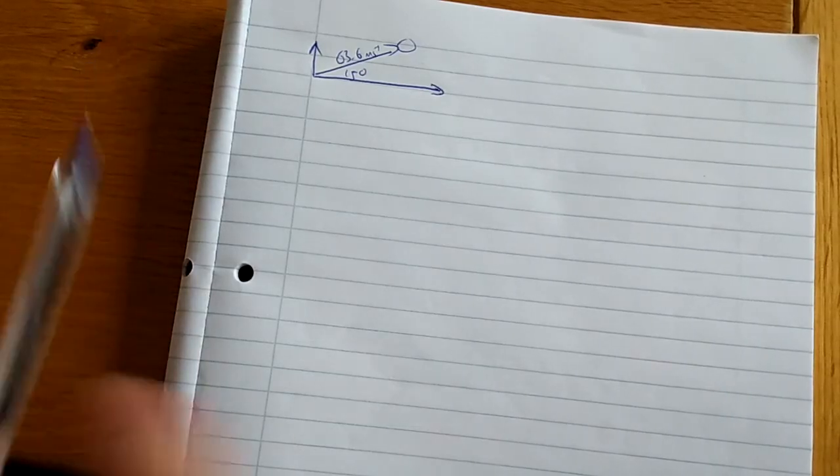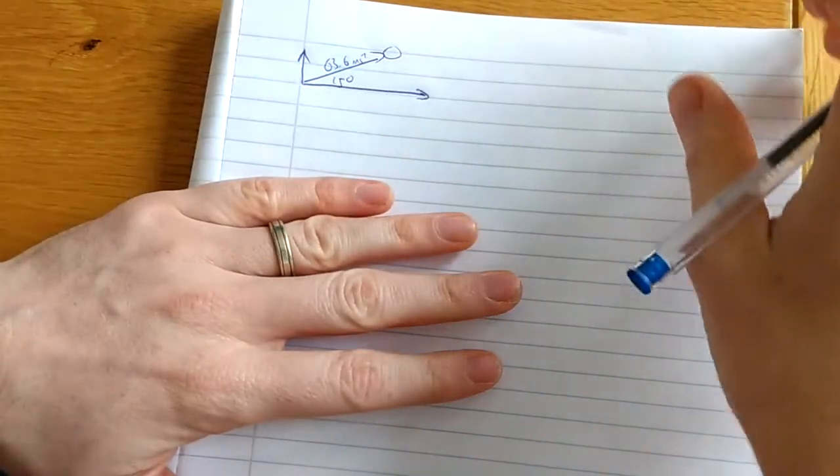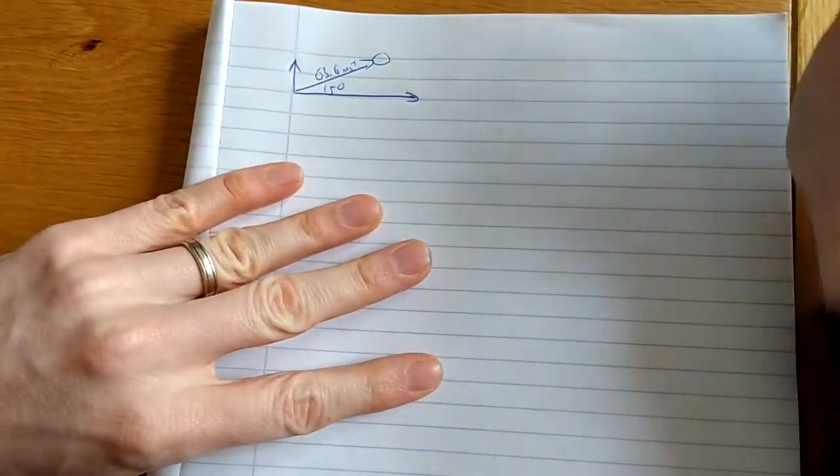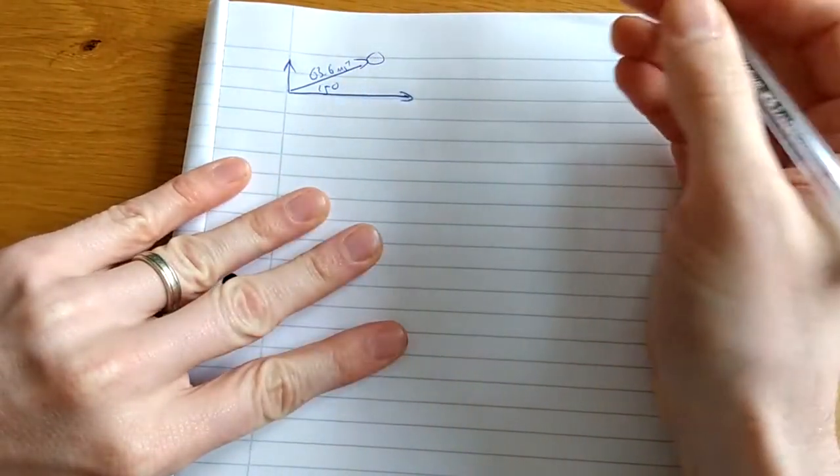Once more with feeling. Last question - the last part of question 6 in the 2014 high-level physics paper. The ball leaves the club head at an angle of 15 degrees to the horizontal.